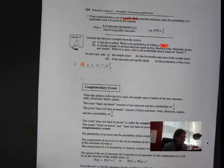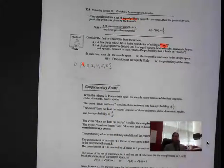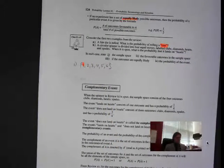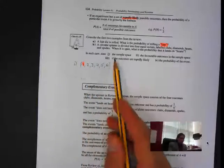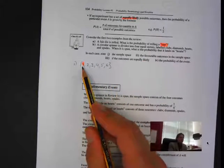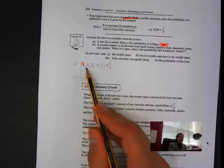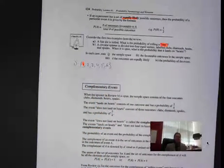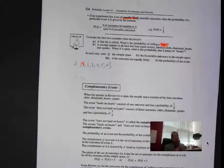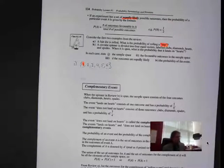Here's an example: a fair die is rolled. What is the probability of rolling a one? Part one — state the sample space. The sample space is one, two, three, four, five, and six. That's all the outcomes we can get.